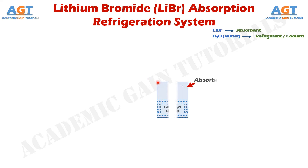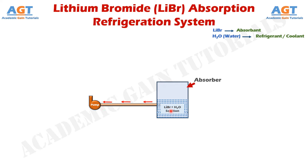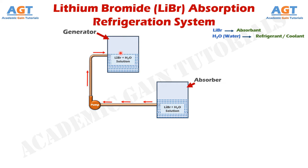First of all, here we have an absorber. Inside this absorber we have a solution of lithium bromide and water. Beside this absorber there is a pump. Using this pump, we will pump this solution of lithium bromide and water from the absorber to the generator. So the function of this pump is to transfer the solution from the absorber to the generator.